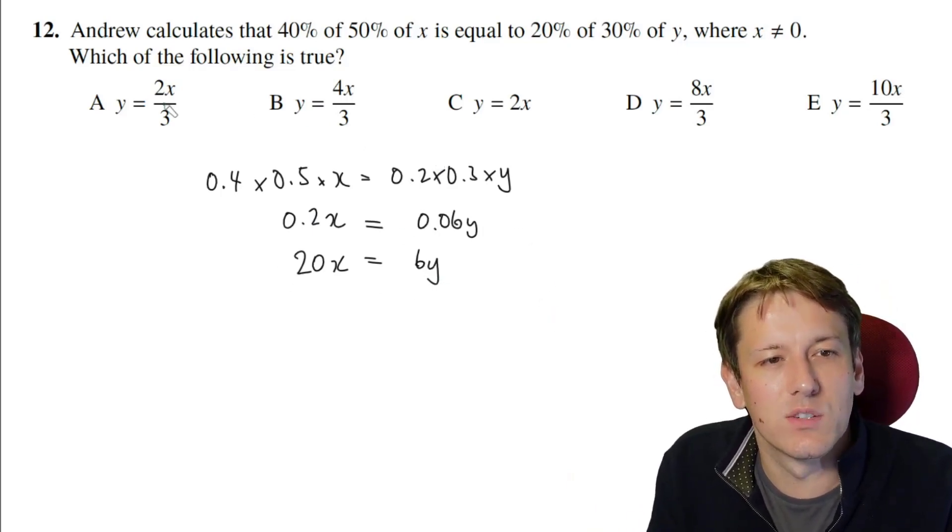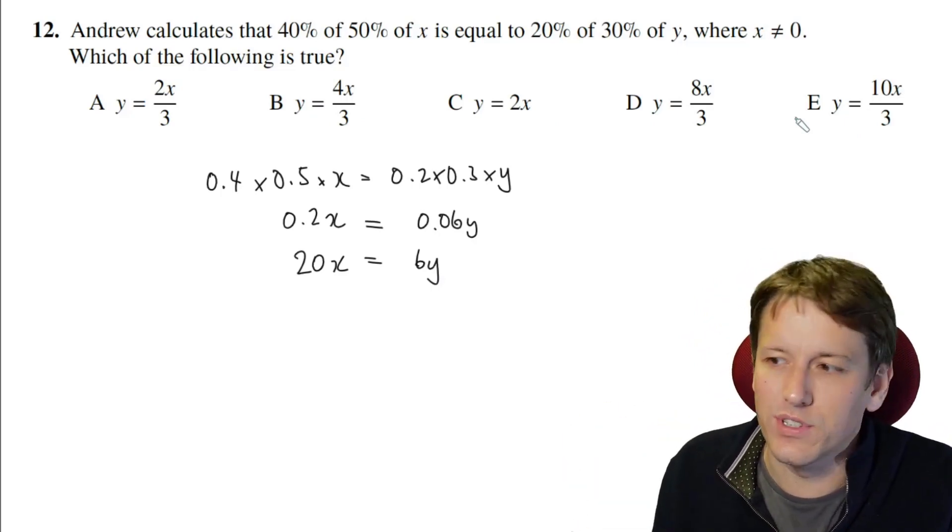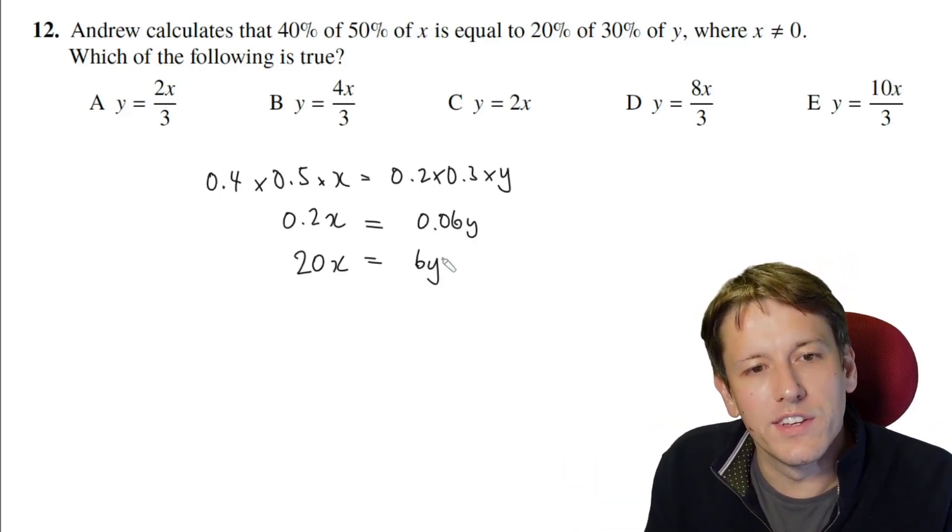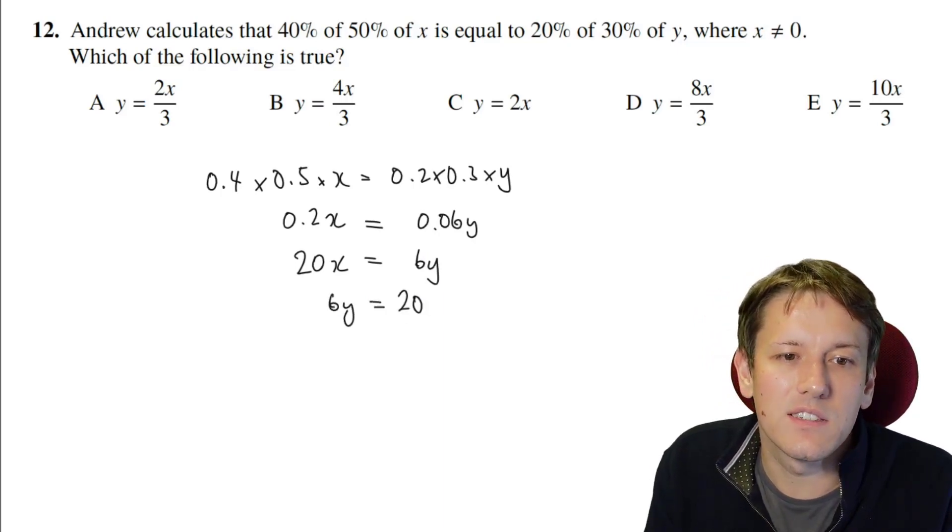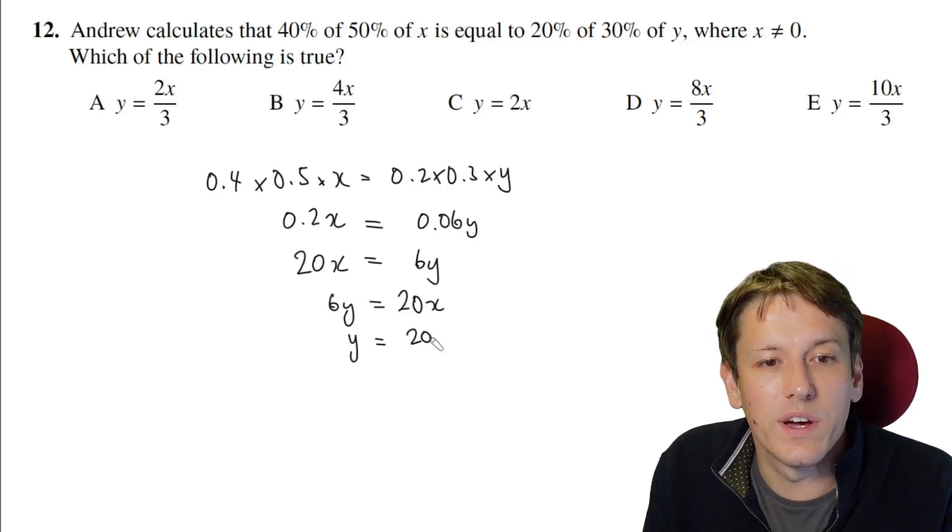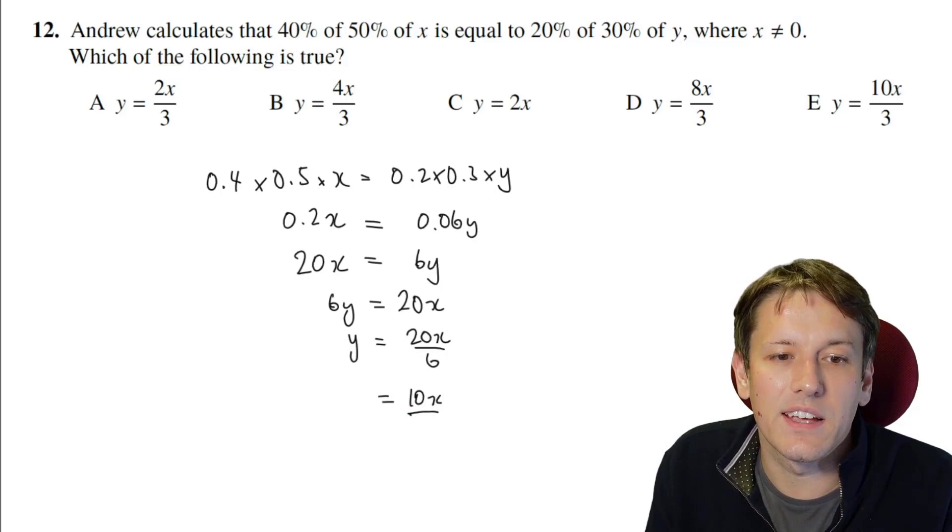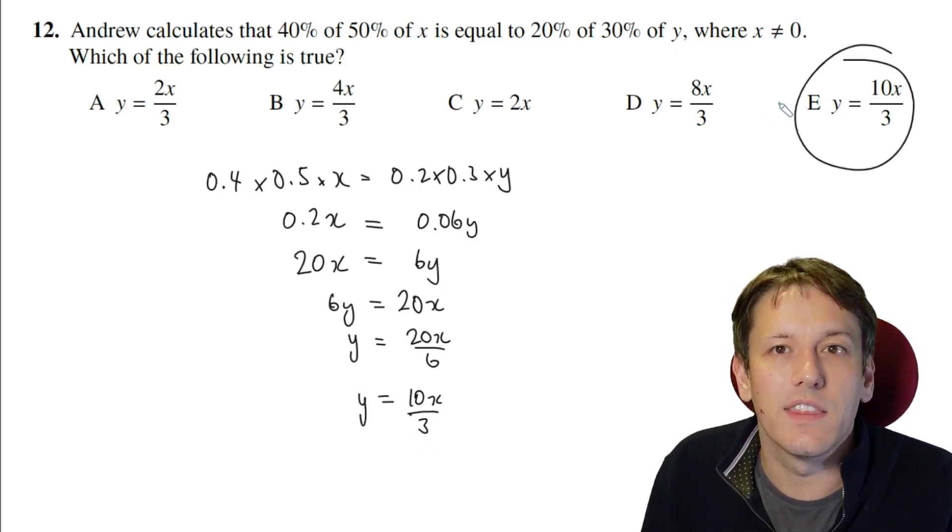Once we've got to 20x equals 6y, we look at the forms of the answers and we see they're all y equal to something. So I just need to make y the subject here. So let's put the y on the left-hand side. 6y is equal to 20x. Divide both sides by 6, and we get y is equal to 20x over 6. And that simplifies down to 10x over 3, dividing top and bottom by 2. And then the answer there is e.